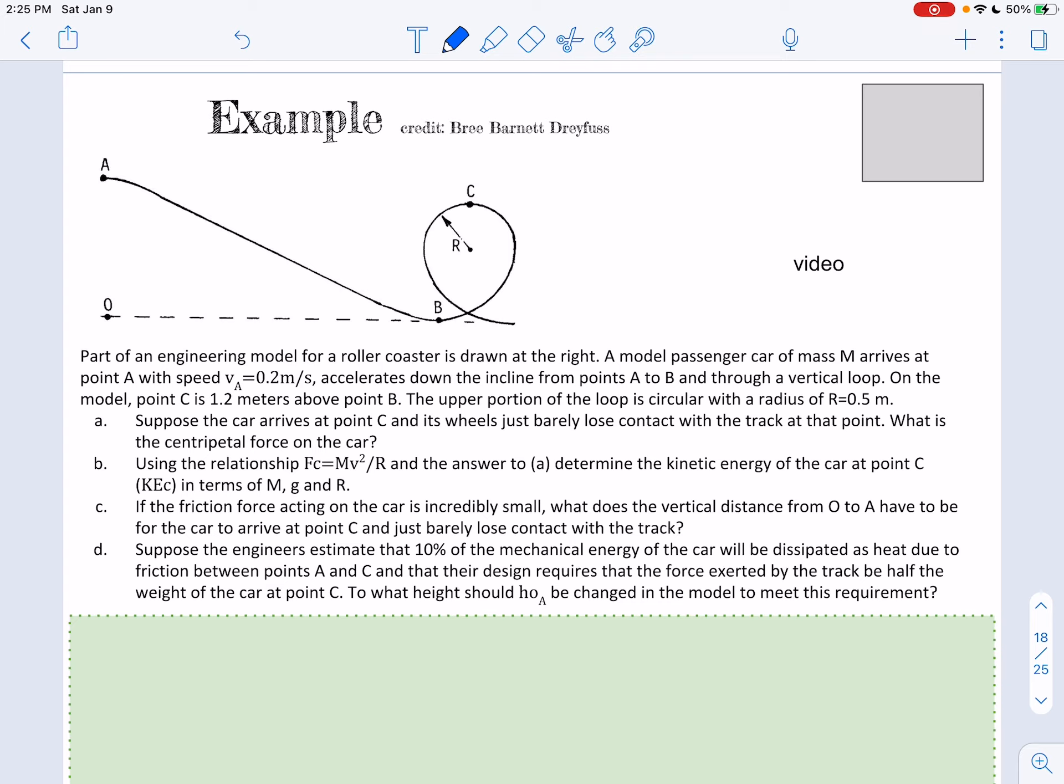Part of an engineering model for a roller coaster is drawn at the right. A model passenger car of mass M arrives at point A with a speed of 0.2 meters per second. With mass M accelerates down the incline from A to B and through a vertical loop. On the model, point C is 1.2 meters above B.